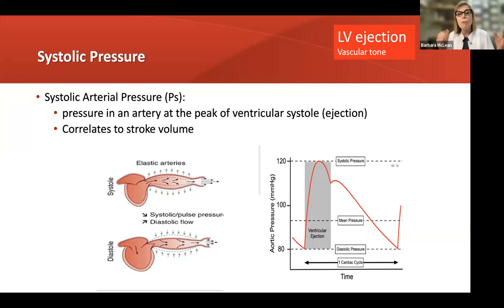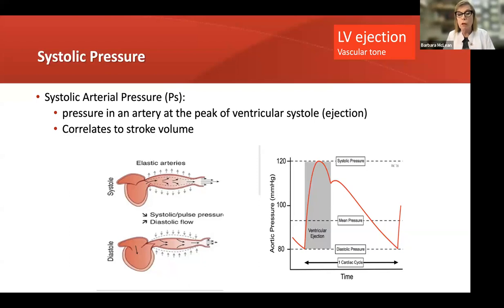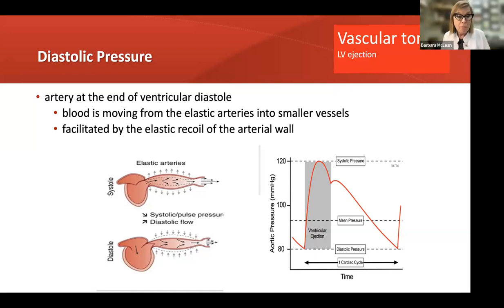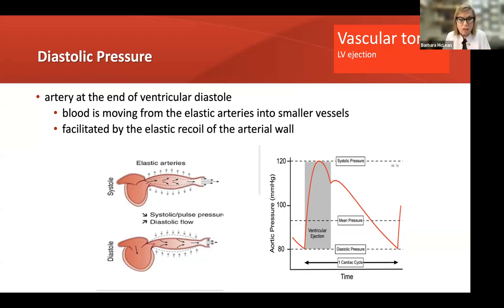Our arteries are elastic. When the LV boluses blood out into the arteries, they dilate and then they recoil — and that recoil is what we call vascular tone. For diastolic pressure, what we're looking at is the recoilability of the arteries after a bolus of blood from LV ejection — the recoil of the artery, which actually is vascular tone. With an A-line, you look at systolic pressure as a reflection of LV ejection and stroke volume, and diastolic pressure as a reflection of vascular tone.